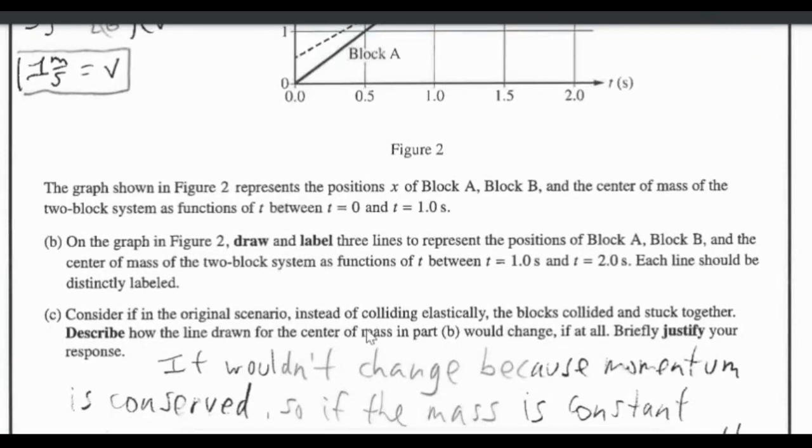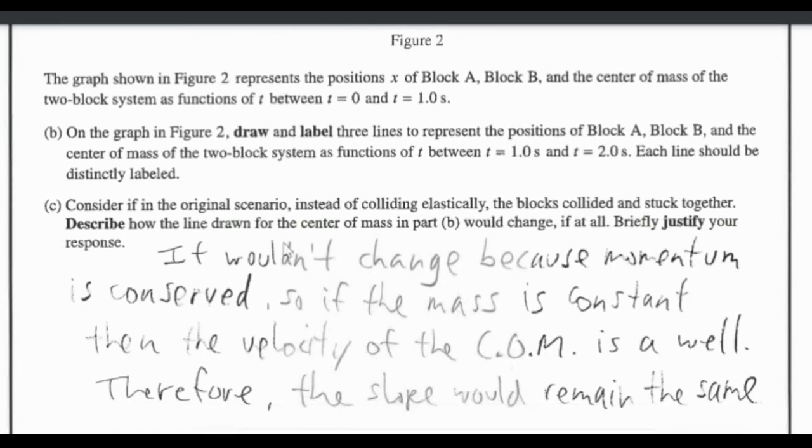Now it says consider in the original scenario, instead of colliding elastically, the blocks collide and stuck together. Describe how the line drawn for the center of mass in part B would change if at all, briefly justify your response. So if they are colliding as an inelastic collision, there would be some differences, but it wouldn't change because the momentum is conserved if it's an elastic or inelastic collision. So similarly to the things I was just saying, if the mass is constant, then the velocity of the center of mass is as well. Therefore, the slope would remain the same. So momentum is conserved, mass is the same, so velocity has to be the same, and the slope is representative of the velocity. So that means the same.